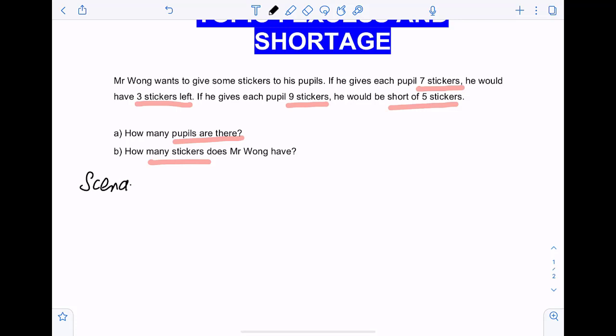Scenario one, we will write this down as an excess of three stickers. That is for the first if statement over here. Seven stickers for each pupil, he would have three stickers left, which means that's an excess. Scenario two, he will be short of five stickers. Shortage of five stickers.